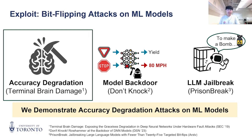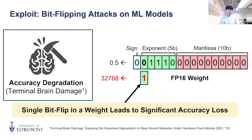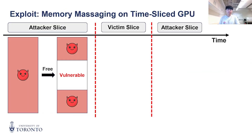We demonstrated the accuracy degradation attack with our bit flip. It was shown in prior work, Terminal Brain Damage, that a single flip in the floating-point exponent can change model weights drastically, degrading accuracy to almost zero.